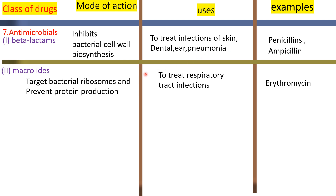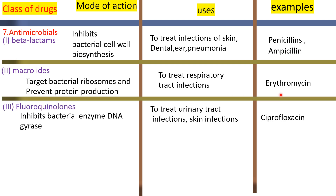Macrolides target the bacterial ribosome and prevent protein production. Macrolides are used to treat respiratory tract infections and urinary tract infections and skin infections. The example is ciprofloxacin.